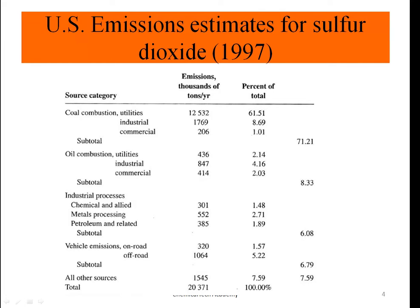Here you can see the US emission estimates for sulfur dioxide production from different sources. Coal combustion — utilities, industrial, and commercial — accounts for around 71% of SO₂ emissions. Oil combustion across utilities, industrial, and commercial use contributes more than 8%. Other industrial processes such as chemical and light metals processing and petroleum refining account for more than 6%, while vehicle emissions — both on-road and off-road — together are less than 7%.